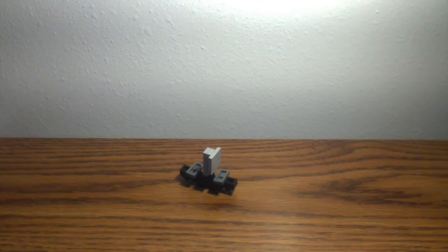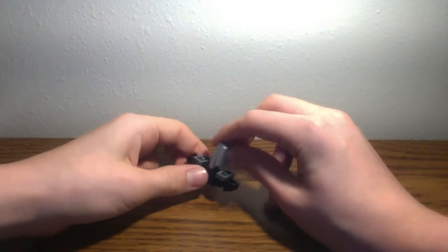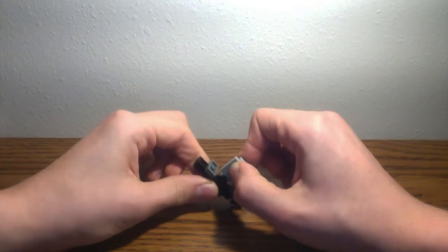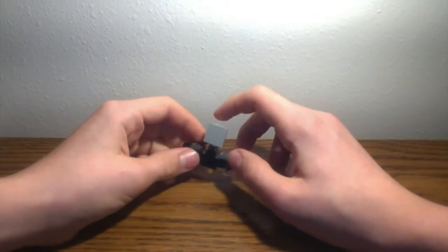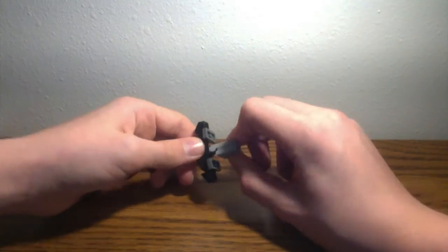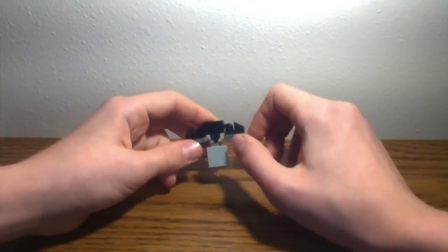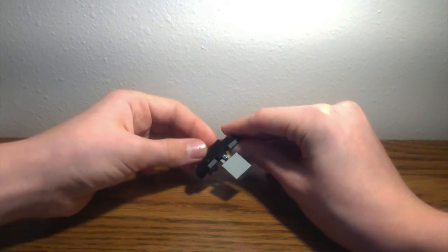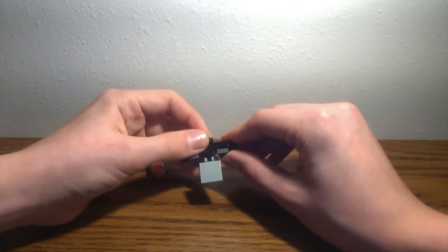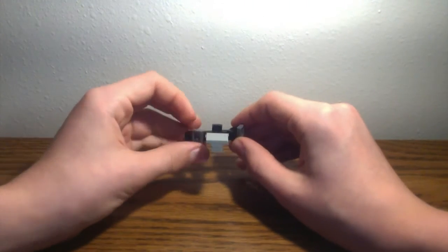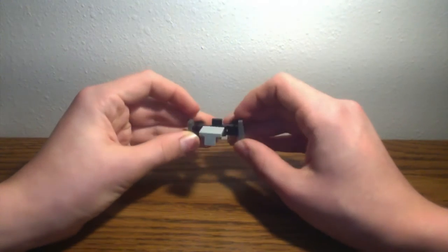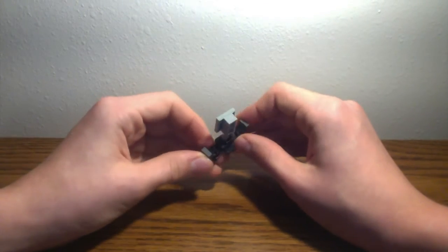To transform him, the first thing you want to do is turn the sail 90 degrees in either direction, whether it be right or left. It really doesn't matter. And you just want to rotate this 1x2 jumper. And then you just want to bring these pieces up, and then have the cannons go down.